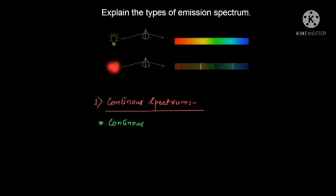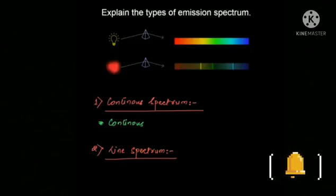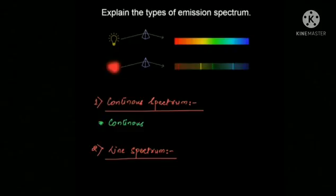The second type of emission spectrum is called the line spectrum. All substances are made up of atoms. When energy is given to atoms, they get excited to a higher energy level. When an atom comes down from a higher to a lower energy state, it releases light of a certain fixed wavelength — this fixed wavelength is the main reason for the line spectrum.